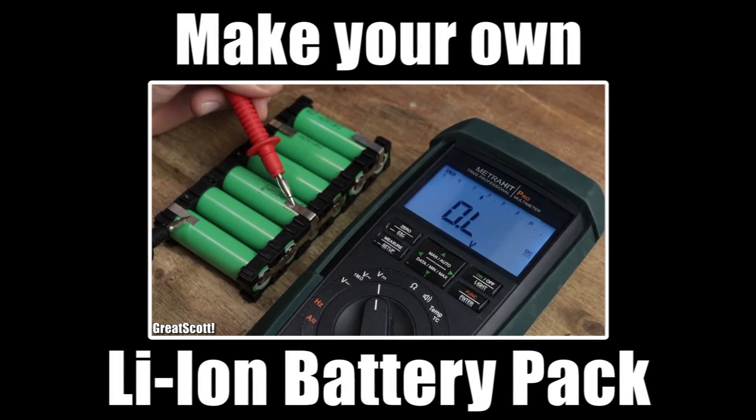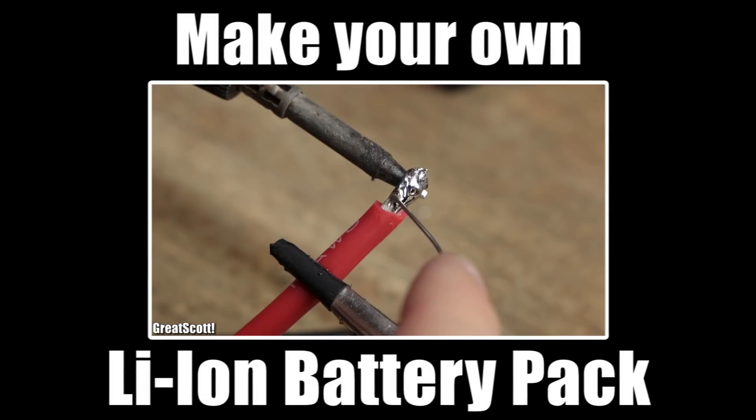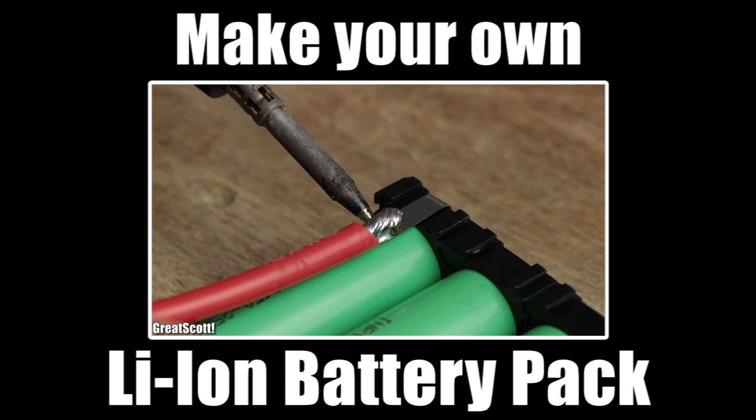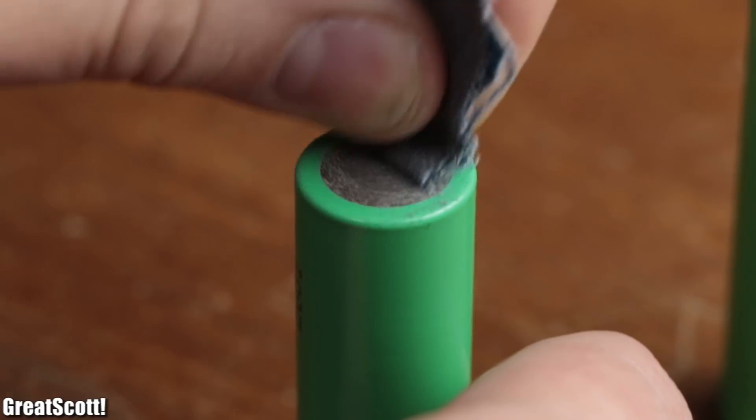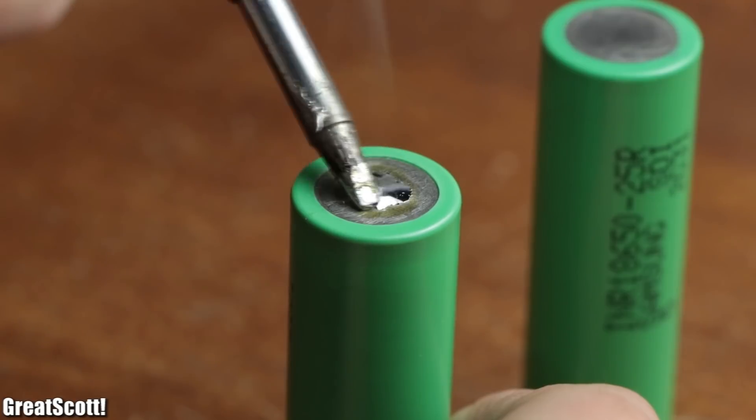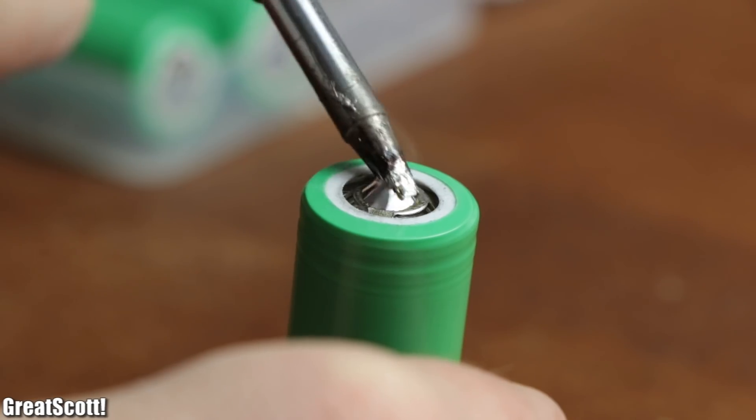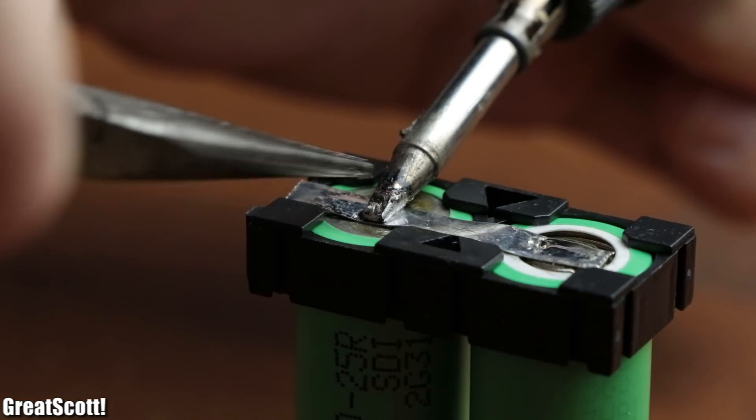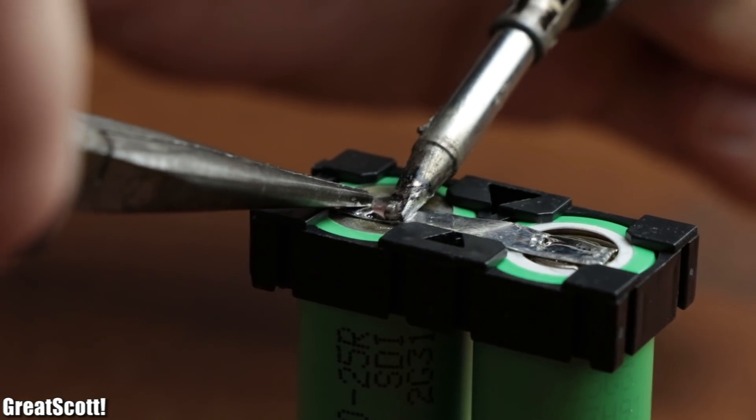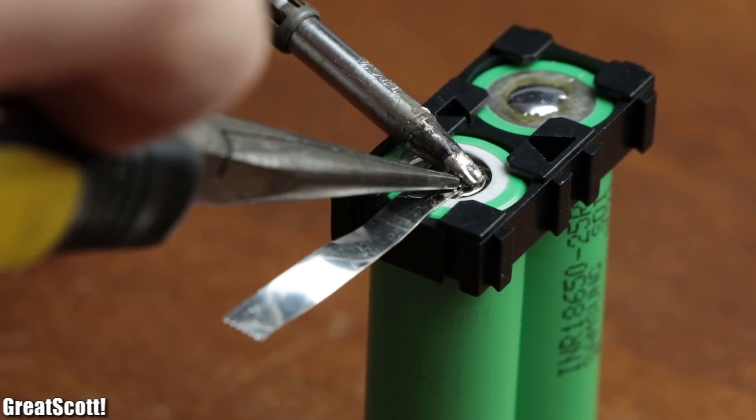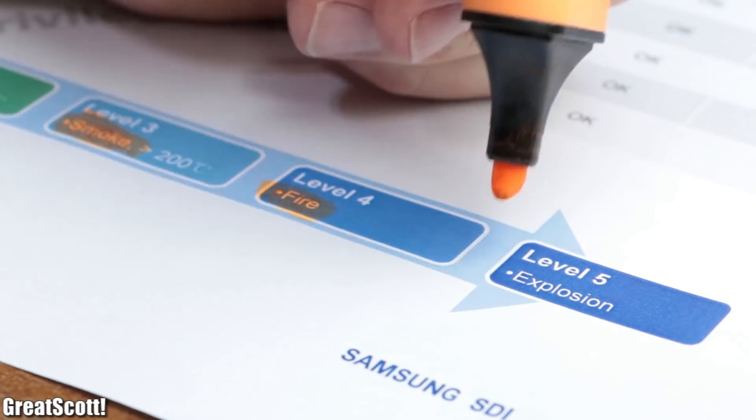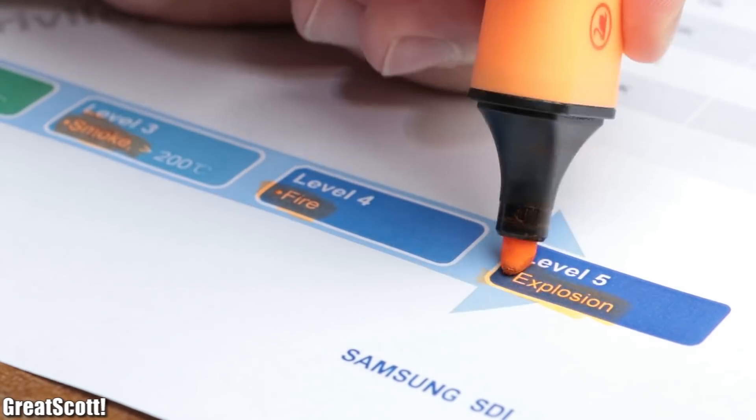In a previous project video I showed you how to create a battery pack out of 18650 lithium-ion batteries. Back then I utilized a rather risky and not recommended method of connecting the battery cells together by soldering the nickel strips directly to them. This can be dangerous because you heat up the battery quite a bit, which according to its data sheets can lead to problems.